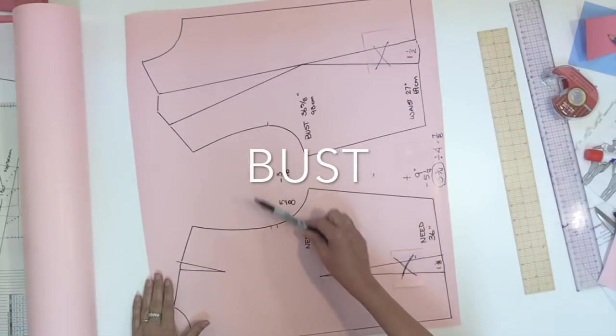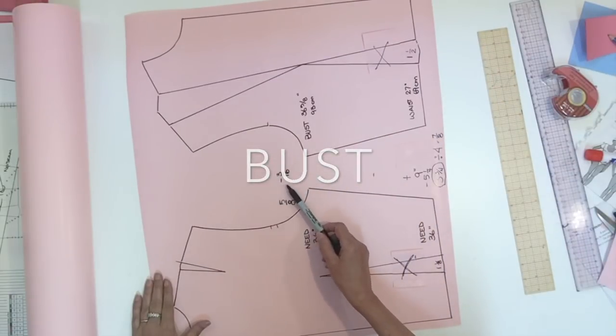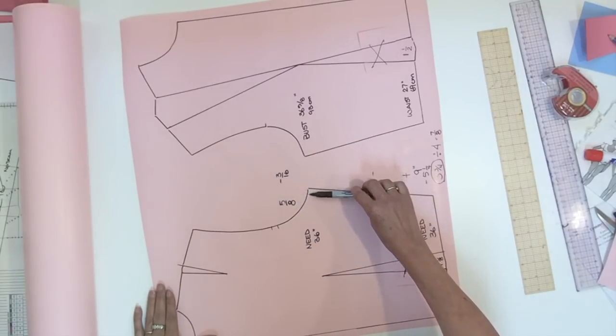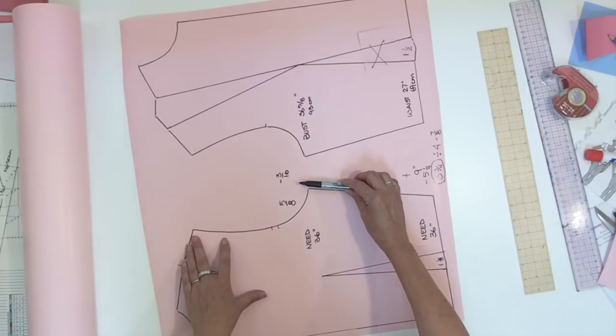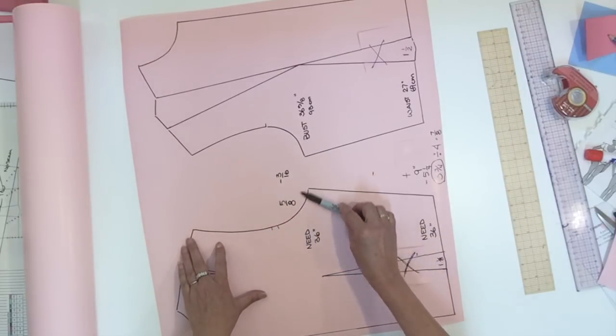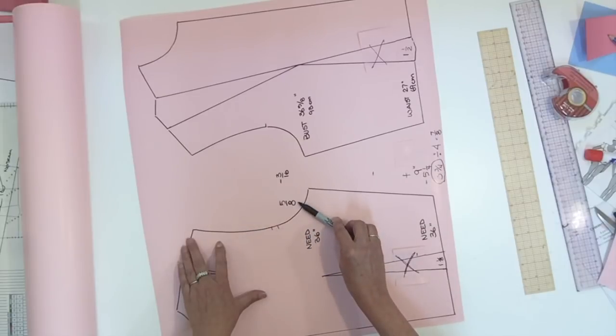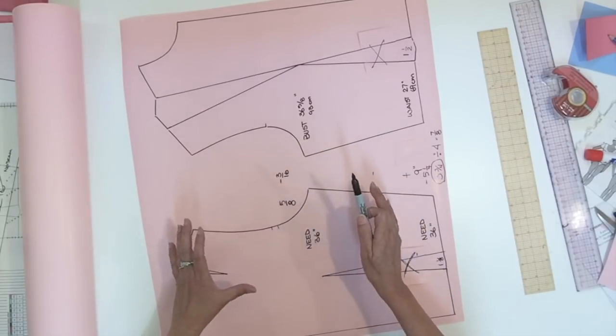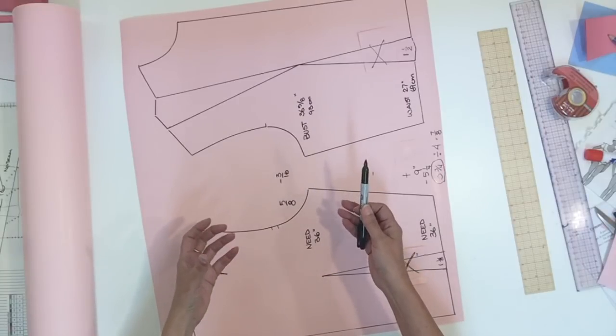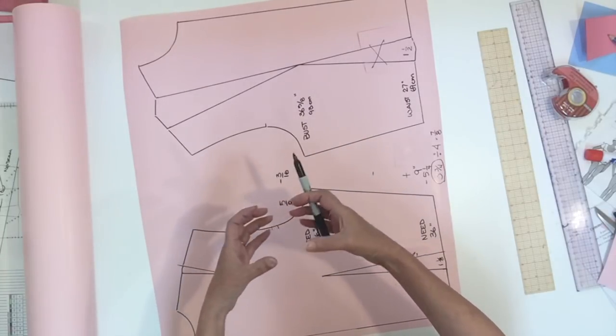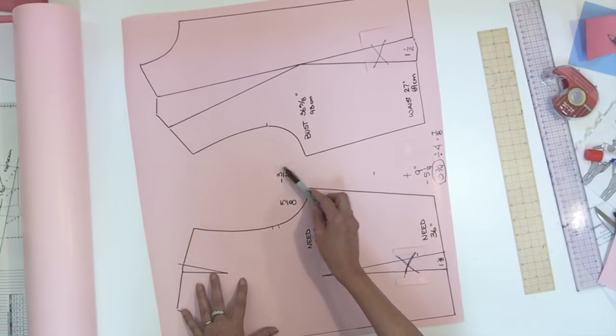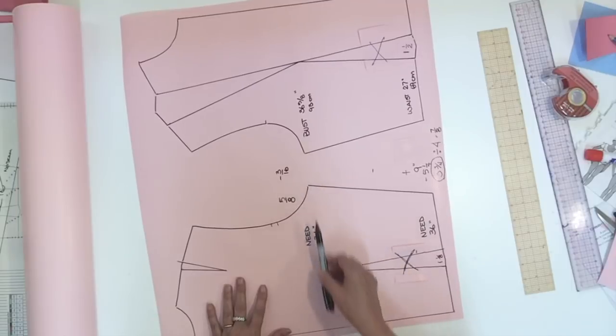Now let's start with the bust where I should reduce 3/16 on each quarter. You could decide to move your underarm point but if you do move your underarm point this is also going to change the measurement of the armhole and the sleeve. And in that case I would leave the sleeve as it is because most probably the arm is also a little more round. So here's the way I would reduce the 3/16 at the bust level.